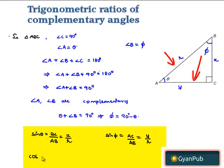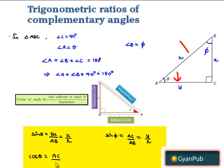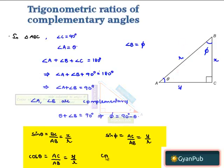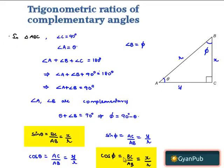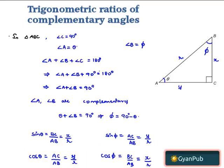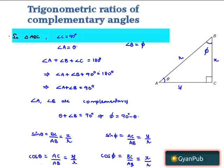Similarly, cos theta is equal to the adjacent side AC divided by the hypotenuse AB, which is equal to Y by R. And cos phi is equal to the adjacent side BC divided by the hypotenuse AB, which is equal to X by R. Now, if we observe, sin theta is equal to cos phi and also cos theta is equal to sin phi.